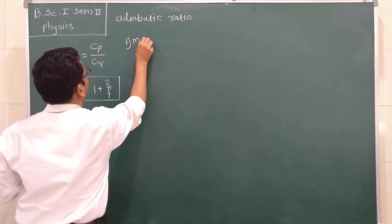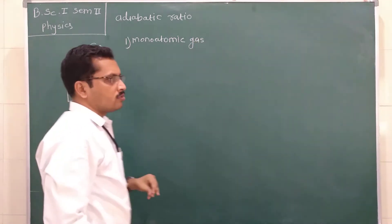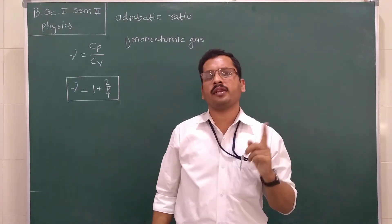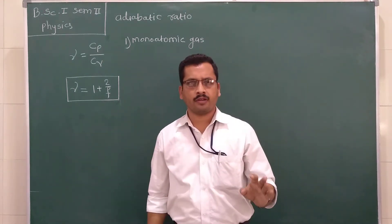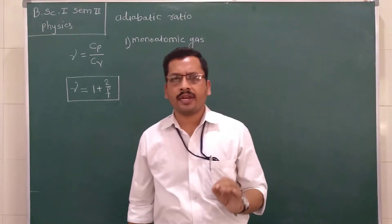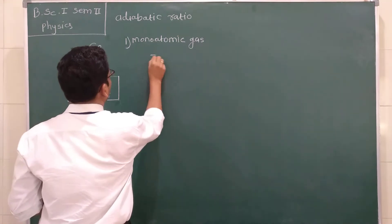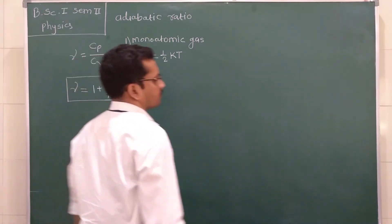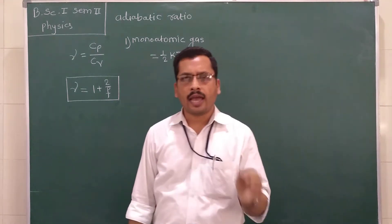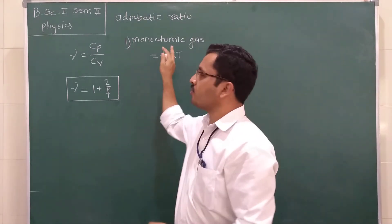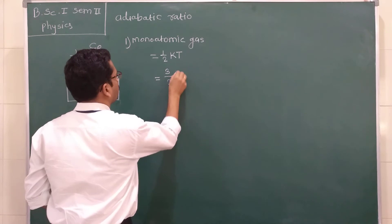First, we look at the monoatomic gas. In the case of monoatomic gas, there is only one atom in a molecule, and this molecule has three degrees of freedom. We know that the average kinetic energy per molecule per degree of freedom is equal to 1/2 kT. Since there are three degrees of freedom for the monoatomic gas, the total energy is equal to 3/2 kT.